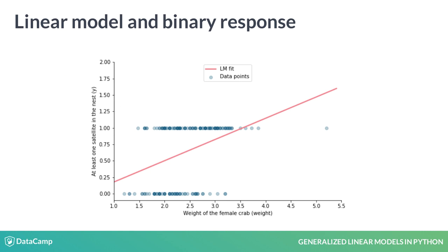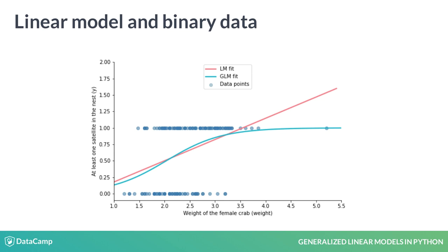First, we fit a linear model using the OLS function. Taking the weight at 5.2 and reading off the probability value, we see the fit is structurally wrong, since we get a value greater than 1, which is not possible by our data. To correct for this, we fit a GLM, shown in blue, with the binomial family corresponding to binomial or logistic regression. Visually, there is a significant difference in the fitted models.